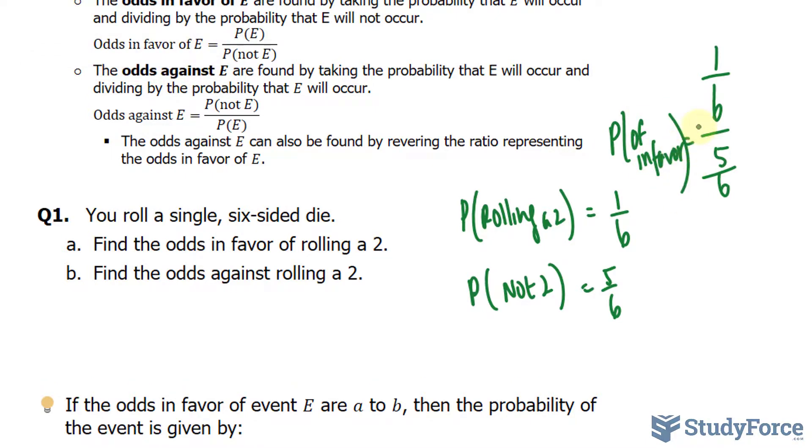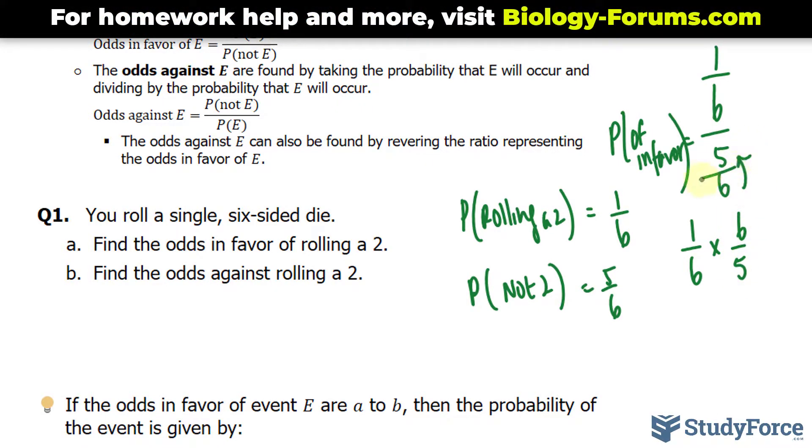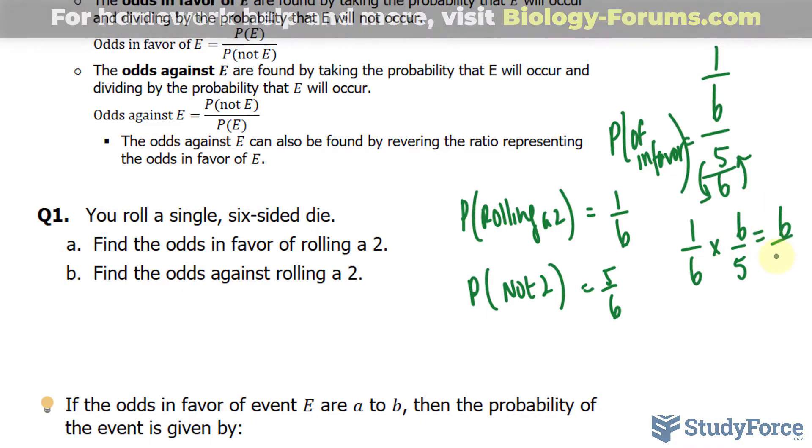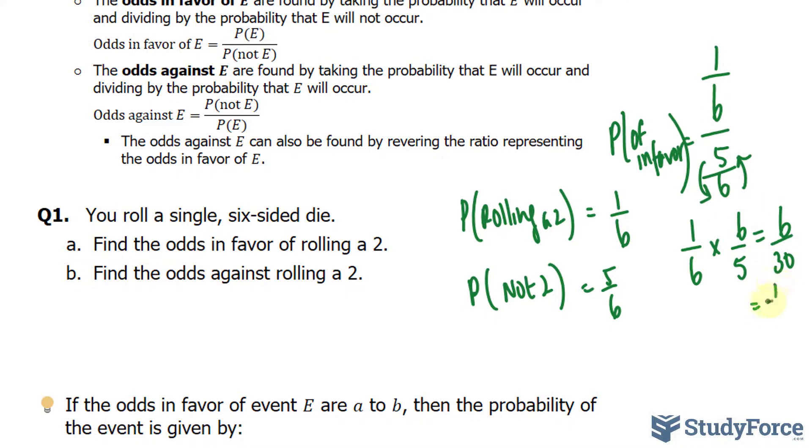Now this is some basic math. We have 1 over 6 divided by 5 over 6. That's the same thing as saying 1 over 6 times 6 over 5. Notice that I took the reciprocal of this and changed the division into multiplication. We end up with 6 over 30, and that's equal to 1 over 5. So the odds in favor of rolling a 2 is 1 over 5, or 1 in 5.